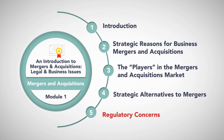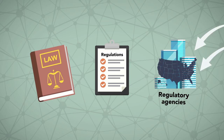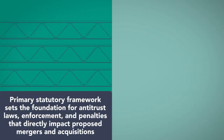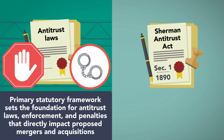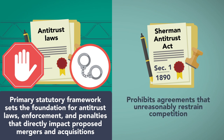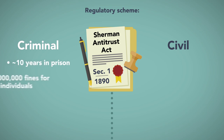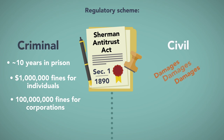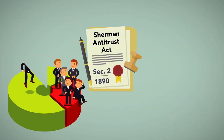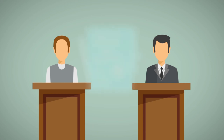Regulatory concerns. The regulatory scheme applicable to mergers and acquisitions covers a complex web of laws, regulations, and regulatory agencies, domestic and potentially foreign as well. The regulatory scheme can be broken down into two general areas. First, the primary statutory framework sets the foundation for antitrust laws, enforcement, and penalties that directly impact proposed mergers and acquisitions. Section 1 of the Sherman Antitrust Act of 1890 prohibits agreements that unreasonably restrain competition. The statute imposes both criminal and civil penalties for violations. Criminal penalties include up to 10 years in prison and $1 million in fines for individuals and $100 million in fines for corporations. Civil suit relief includes treble (triple) damages and attorney's fees. Section 2 of the Sherman Act prohibits monopolization, attempted monopolization, and conspiracies to monopolize trade. Today, prosecutors and private plaintiffs rarely use Section 2 in antitrust actions.